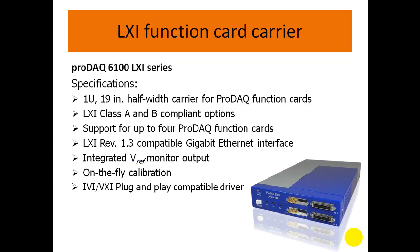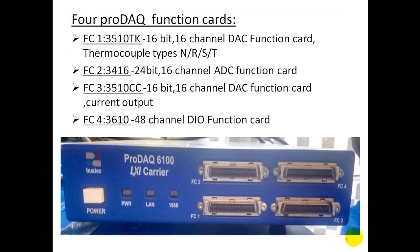The image shown is the 6100 LXI function card. Its specifications are: 1 rack unit of height, 19-inch half-width carrier which supports 4 product function cards. LXI 6100 is a version 1.3 Class B device with an optional Class A trigger LXI interface, featuring Gigabit Ethernet interface, an integrated voltage reference plugin module to allow fly calibration, and a VXI plug-and-play compatible driver.